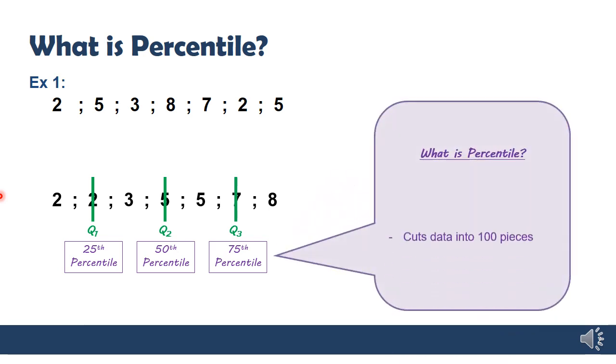So what do we mean when we say percentile? Percentile divides the data into 100 equal portions, whereas quartile was four equal portions. This may seem counterintuitive because in this data set I only have seven values. So how can it be cut into 100 pieces? We really mostly use percentile for large data sets.